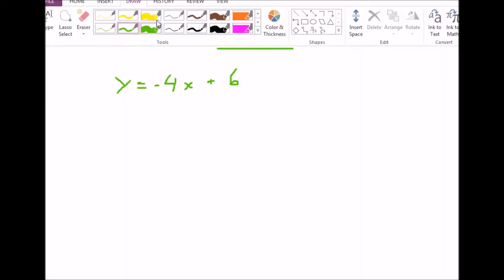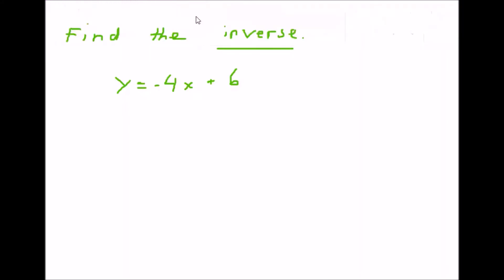In this section I'll show you how to find inverse functions. If it gives you an equation y equals negative 4x plus 6 and says find the inverse, you're going to flip around y and x. So you're gonna write x equals negative 4y plus 6, and then you're gonna solve for y because the equation of a line is always solved for y.